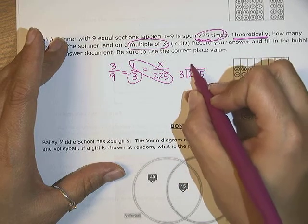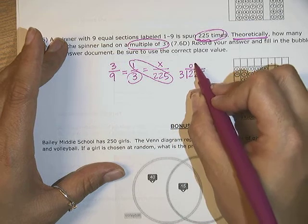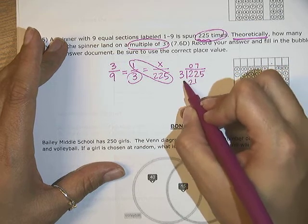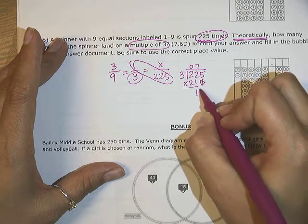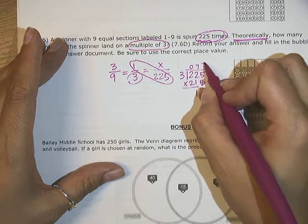Three goes into two zero times. Three into 22 is seven times. That's going to give you 21. Subtract. And, oops, bring down that five. And three into 15 is five times.